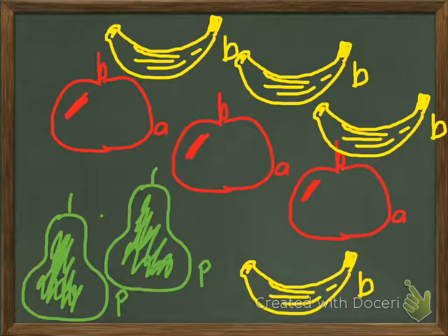The first thing I'd like you to have a look at is my beautiful pictures here. You can see we've got yellow bananas, red apples, and green pears. Have a look at this screen and find out how many bananas, apples, and pears we've got. We're going to turn it into algebra.